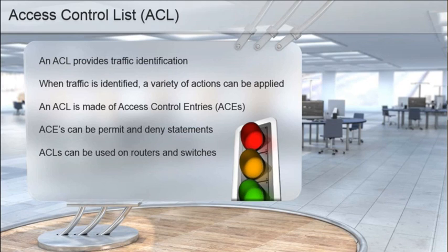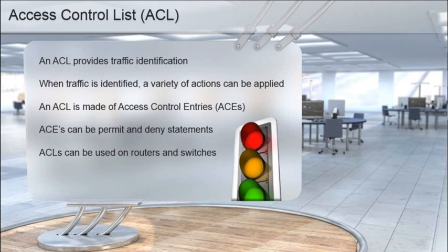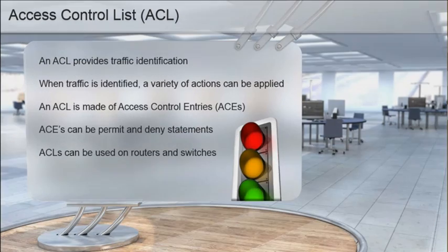Basically, we can use an access list to identify a certain type of traffic, and then we can either say yes, we want to do something with that traffic, or no, we don't want to do something with that traffic.